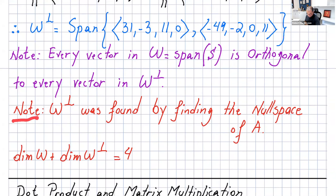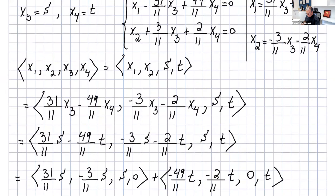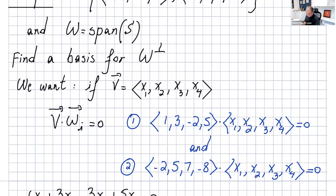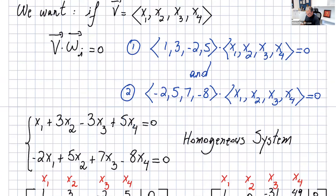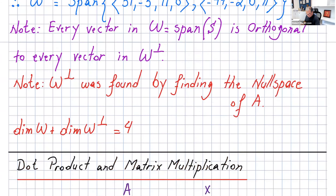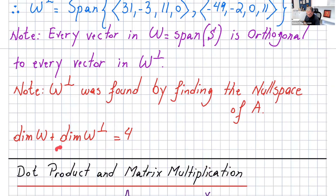Note that w-perp was found by finding the null space of a. When you solve the homogeneous system, you find a basis for the null space — that's exactly what we did. The dimension of w is two and the dimension of w-perp is two, and adding them gives n = 4.